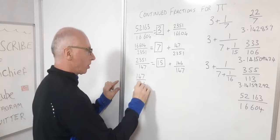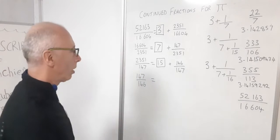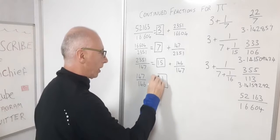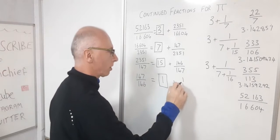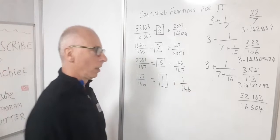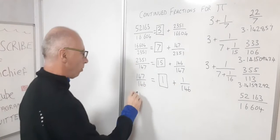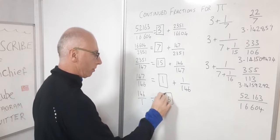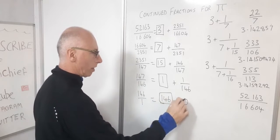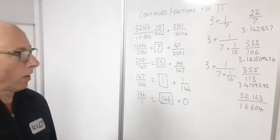Bring the reciprocal over. 147 over 146, well that is straightaway going to be 1, so that's our integer. And our leftover is going to be 1 over 146. So last line, when you've got a 1 on top you know you've come to the end. So then our last integer is 146 plus 0, and that's our last line.